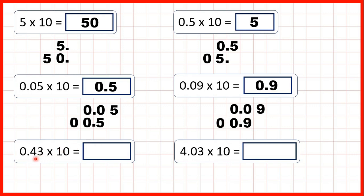Now we have 0.43 times 10. We write out the decimal, copy down the decimal point, and move the digits across. That gives us 40.3.